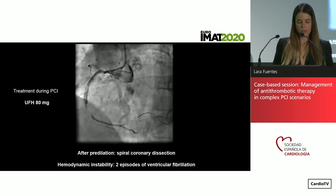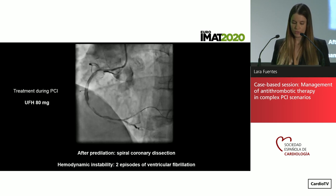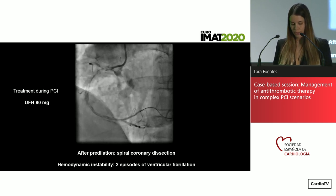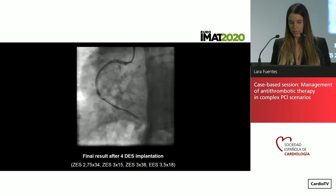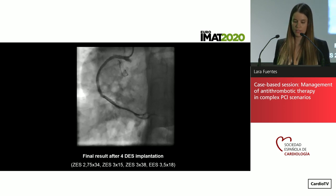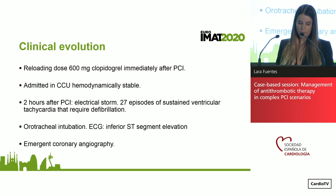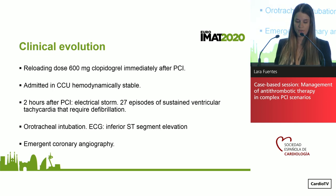The patient receives treatment during the PCI with 18mg of unfractionated heparin. After wiring and balloon predilation, the patient has a spiral coronary dissection from ostial to the distal right coronary artery and hemodynamic instability with two episodes of ventricular fibrillation. The final angiographic result shows four drug-eluting stents implanted from ostial to distal right coronary artery. After the procedure, the patient is reloaded with 600mg of clopidogrel and admitted in the CCU hemodynamically stable, but two hours after the PCI he has an electrical storm with 27 episodes of sustained ventricular tachycardia requiring defibrillation.